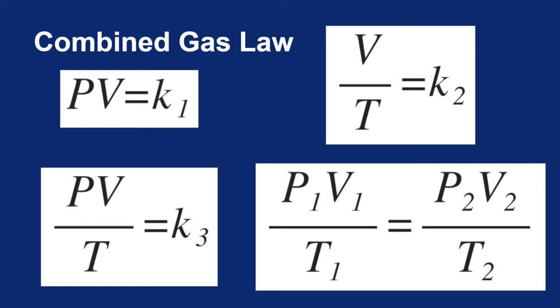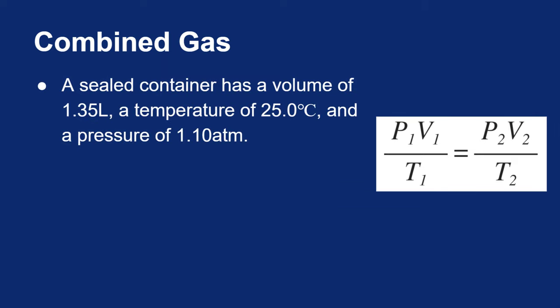So let's give it a try. I have a sealed container with a volume of 1.35 liters and a temperature of 25 degrees Celsius, and the pressure measured inside is 1.1 atm. So I'm starting off well. A sealed container means that the amount of gas is being held constant. No gas can get in and no gas can get out.